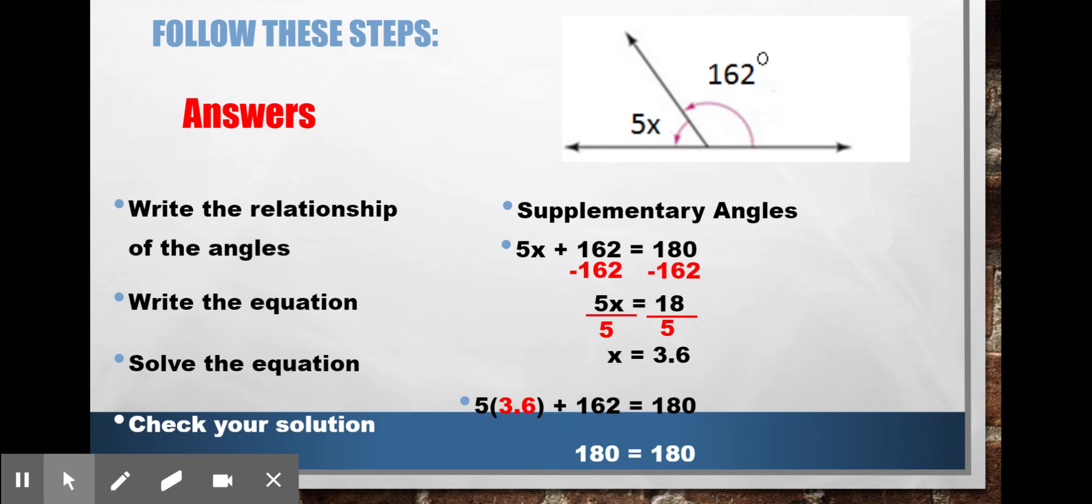So 3.6 is the value of x. I should be able to substitute that back in, and that's going to give me the actual angle measurement. So I'm going to do that now.